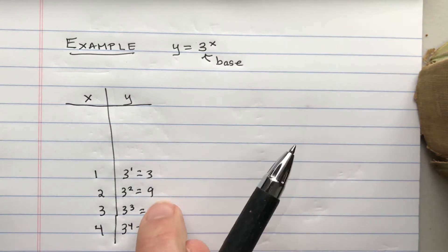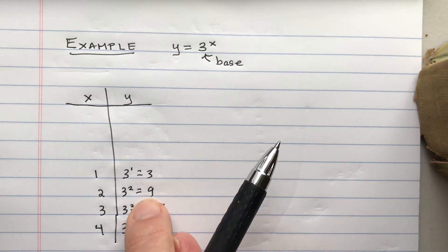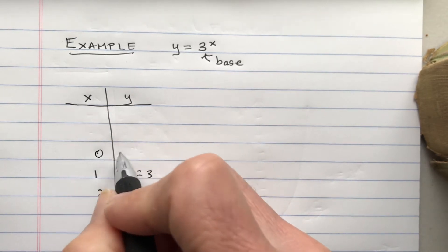Going the opposite way, you divide by 3. 81 divided by 3 is 27. Divide by 3 is 9. Divide by 3 is 3. Divide by 3 again, you're going to get at 0.